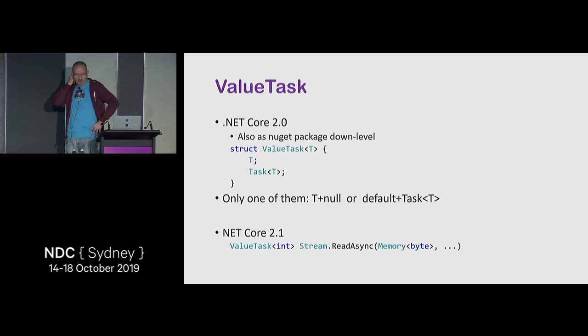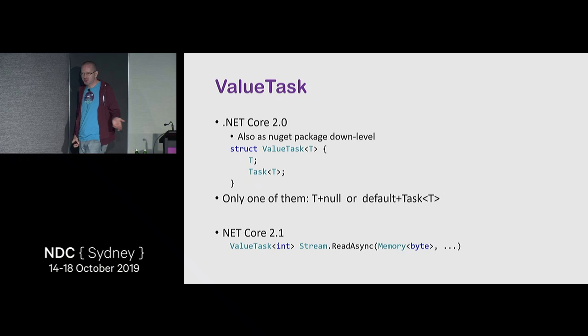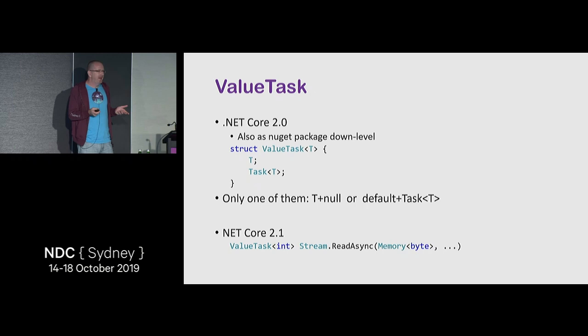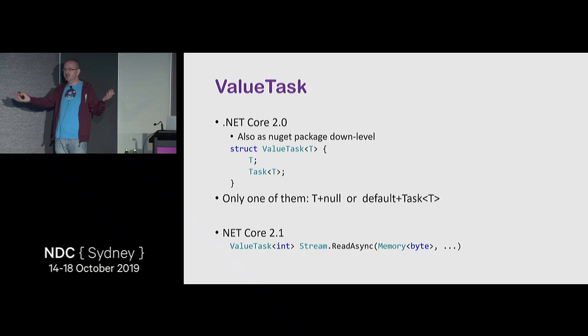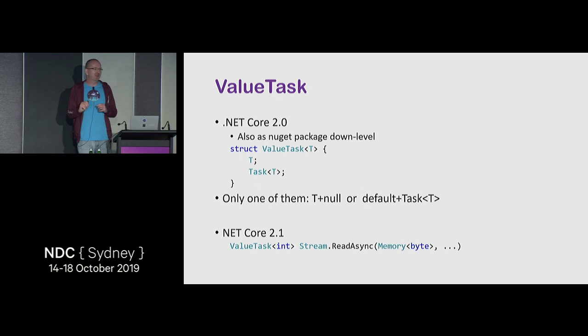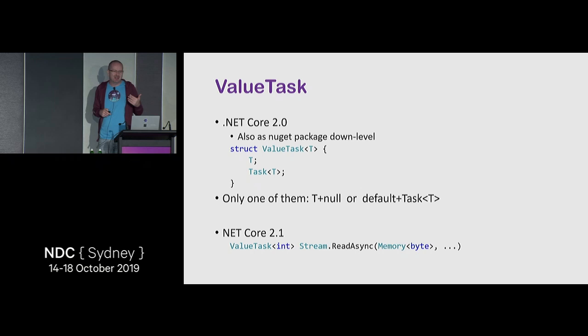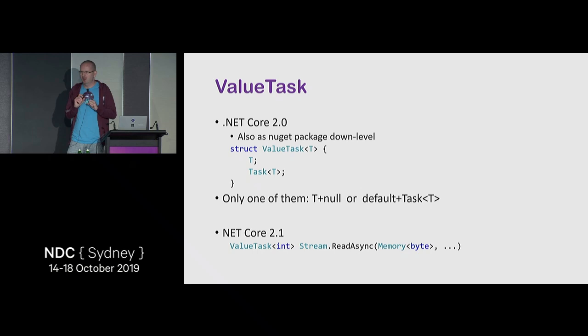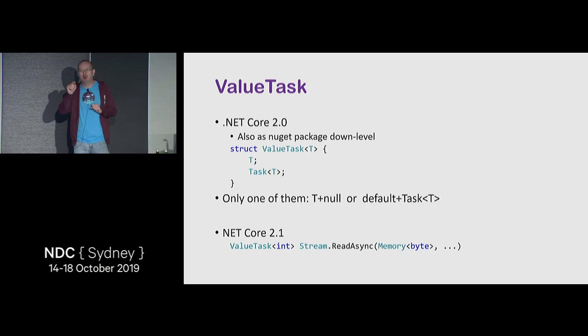By the time we had ValueTask, lots of functions already returned Task. We can't overload on return type, but in .NET Core 2.1 when we introduced Span and Memory<T> we had to add overloads anyway. When adding the Memory<byte> overload on streams, we made them return ValueTask instead of Task for a performance win. There are PRs in CoreFX where people pass byte arrays and the feedback is 'wrap it in a MemoryStream' — because that calls the overload using ValueTask and allocates less.